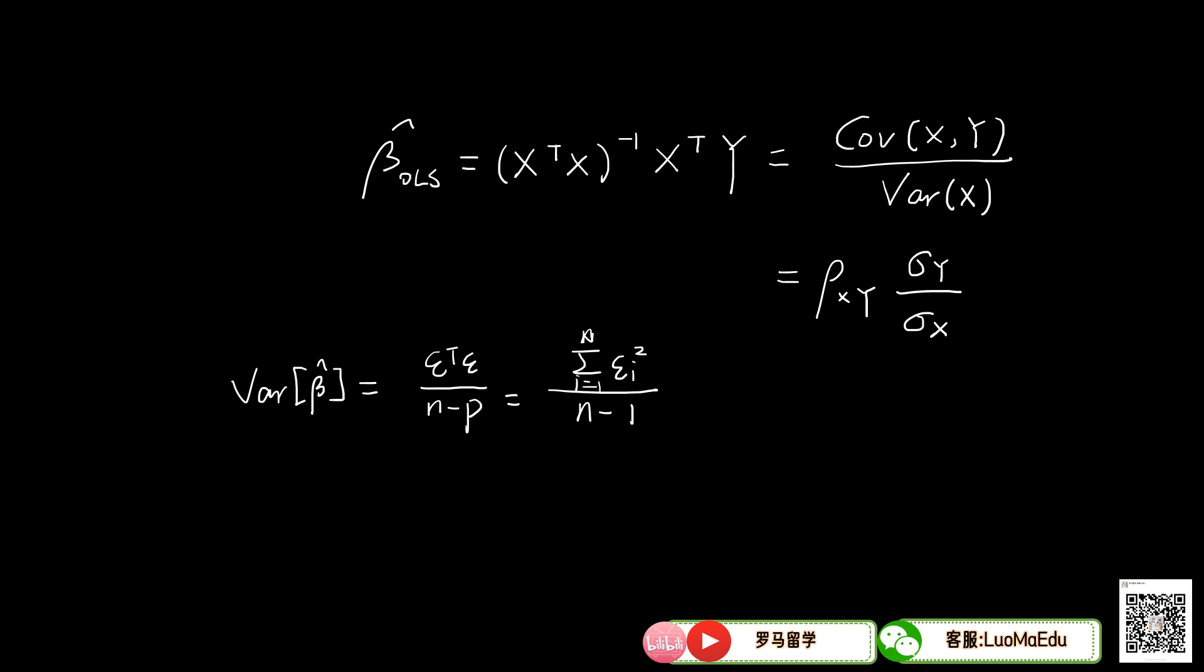Now let's see whether it's possible for a single variable to have low R-square but be very significant. We know from OLS, ordinary least square estimator beta hat will equal x transpose times x inverse x transpose times y. In single variable regression, we can simplify it to covariance of x, y divided by variance of x, and simplify it further to the correlation between x and y times the ratio of standard deviation y divided by standard deviation of x.